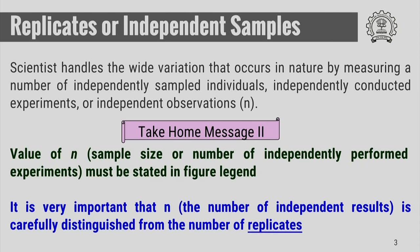Let us try to understand the meaning of replicate samples and independent samples. Scientists often handle the wide variation that occurs in nature by measuring a number of independently sampled individuals, independently conducted experiments, or independent observations — that is called your sample size, small n. The second important take-home message is that the value of small n, the sample size or number of independently performed experiments, must be stated in the figure legend.